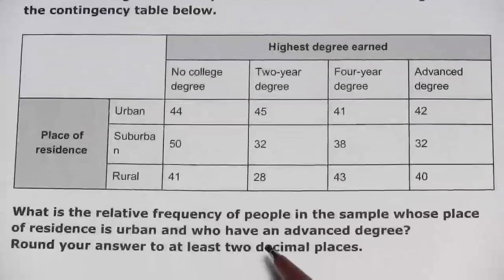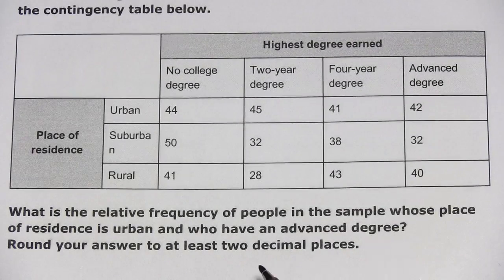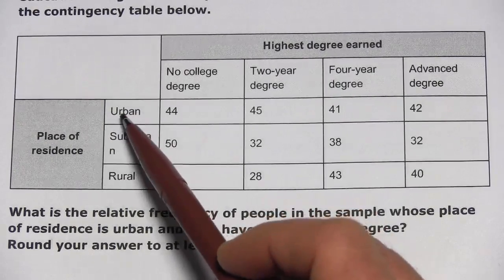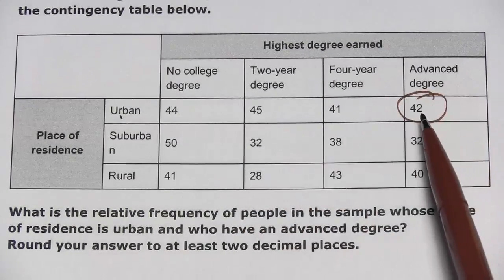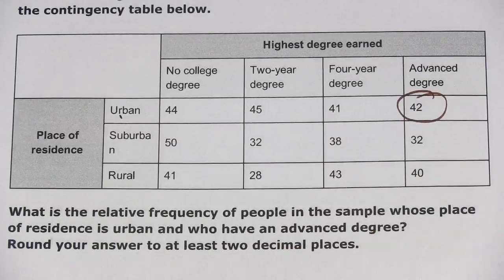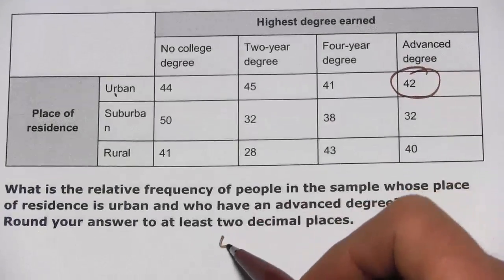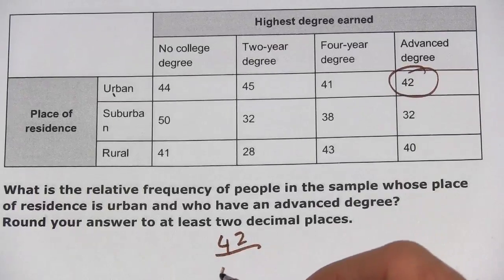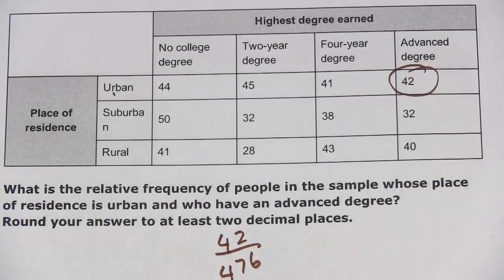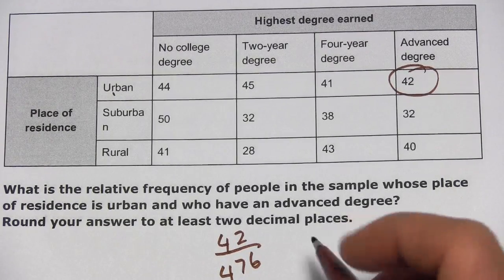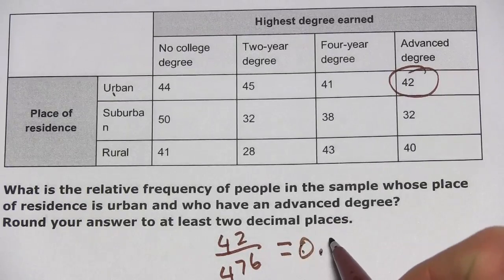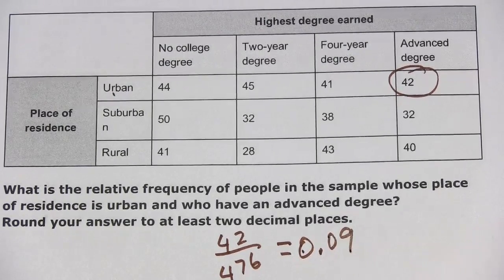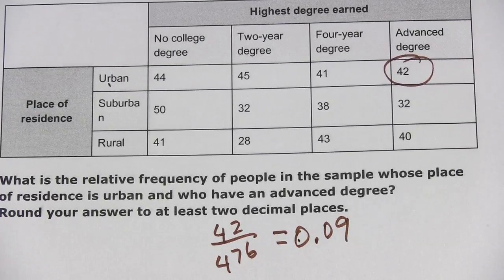This time the question is: what is the relative frequency of people in the sample whose place of residence is urban and who have an advanced degree? We go across urban, down advanced degree, and find there are 42 that satisfy both of those. The relative frequency is 42 divided by the sample size, 476. So 42 divided by 476, rounded to two decimal places, is 0.09. So that's a little bit of work with relative frequencies from contingency tables.